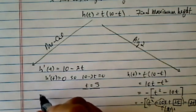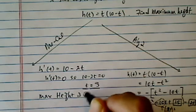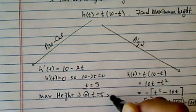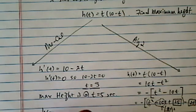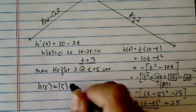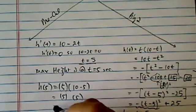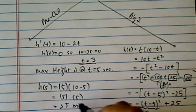Okay, that's where the maximum height, maximum height is at t equal to 5 seconds. Then you value it in there, h of 5 is equal to 5 times 10 minus 5, and it's 5 times 5, also equal to 25 meters.